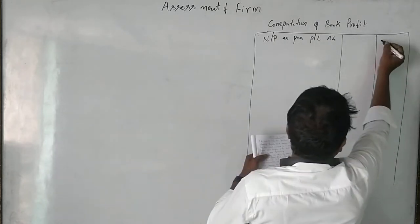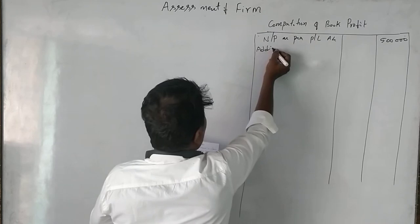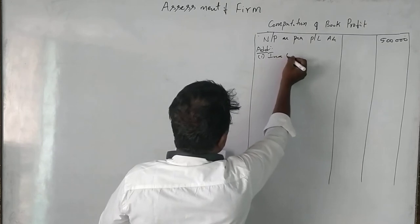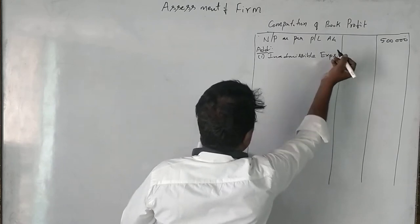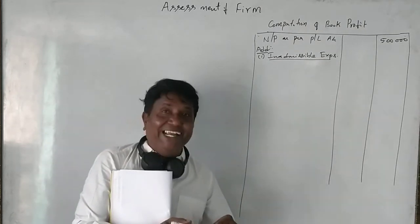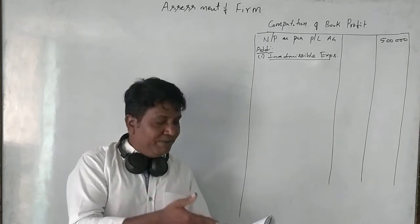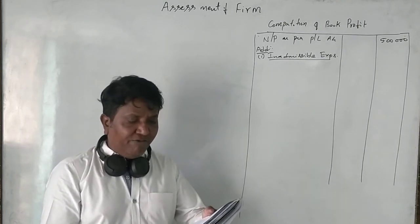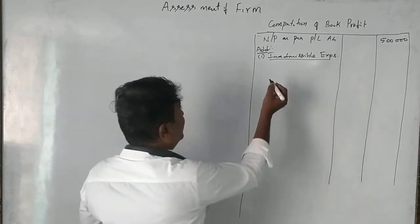The net profit as per profit and loss account is given as five lakh rupees. To this five lakhs we need to add certain items — these are inadmissible expenses. Inadmissible expenses are expenses which are not related to the business. In our question, donation to NDF is one such item — donation to NDF is 30,000 rupees.